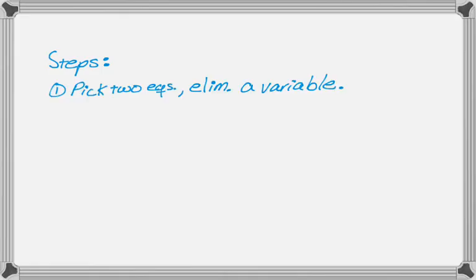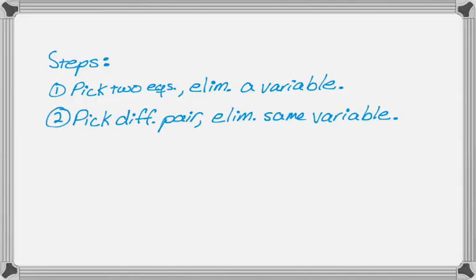The first thing I like to do is take two of the equations and eliminate one of the variables. It doesn't matter which one, so we're going to pick any two and eliminate one variable. The next thing you do is take a different pair of equations and eliminate the same variable. If you choose to eliminate z in step one, you have to eliminate z in step two.